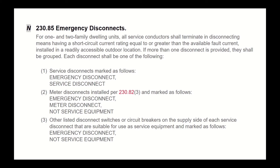If you have an emergency disconnect and then a service disconnect, each disconnect shall be one of the following. Number one: a service disconnect marked as emergency disconnect / service disconnect. So if you already have a disconnect outside and that's your service disconnect, then your service disconnect can serve as your emergency disconnect — you just mark it 'service disconnect / emergency disconnect.'